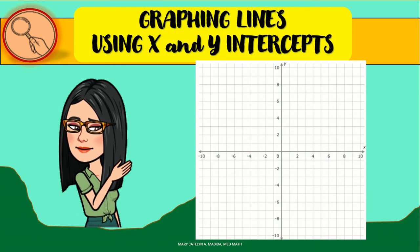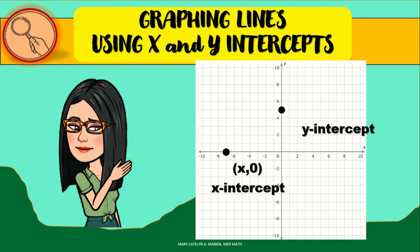Now let us graph lines using x and y-intercepts. In algebra, the x-intercept is a point on the graph where y = 0, while the y-intercept is a point on the graph where x = 0. If you know where the line crosses both the x and y axes, you can use these points to graph the linear equation.